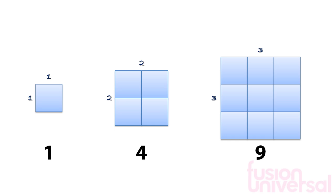We can see that one times one equals one, two times two equals four, and three times three gives us nine.